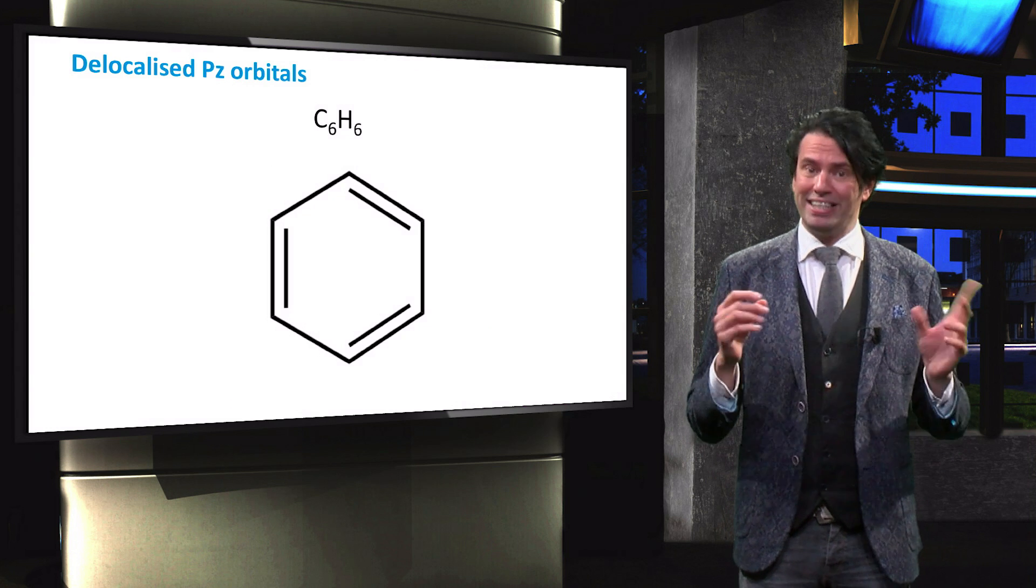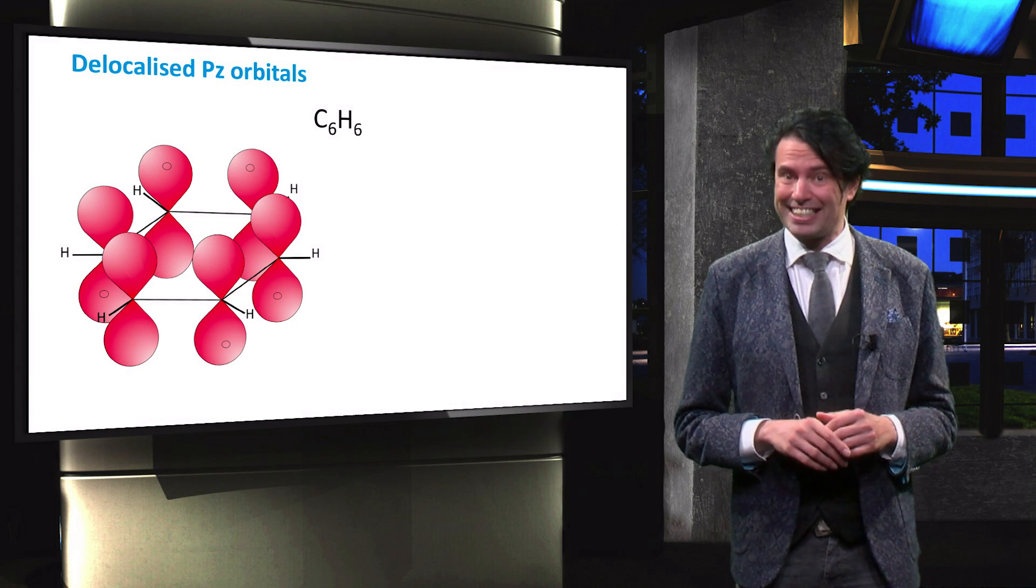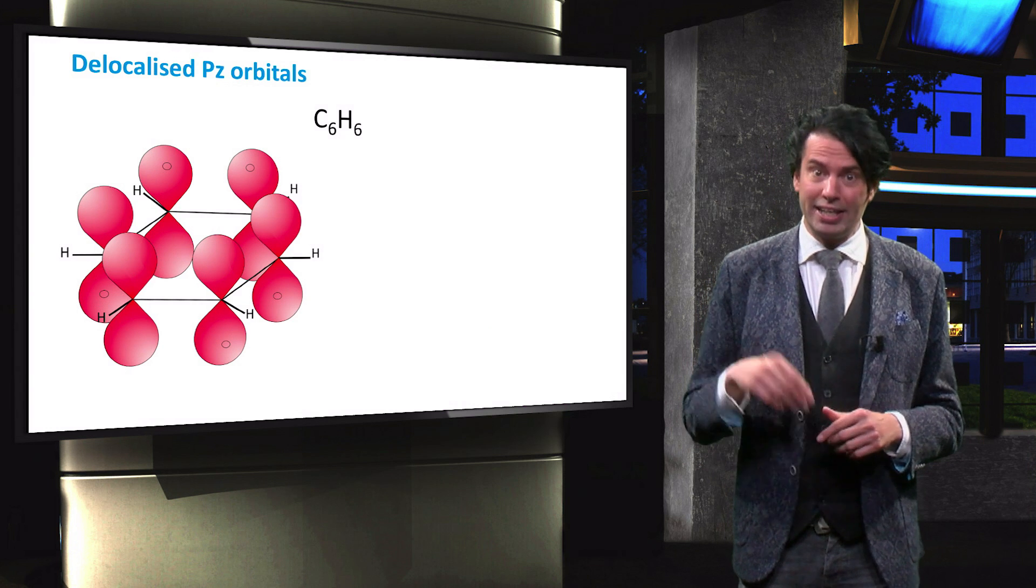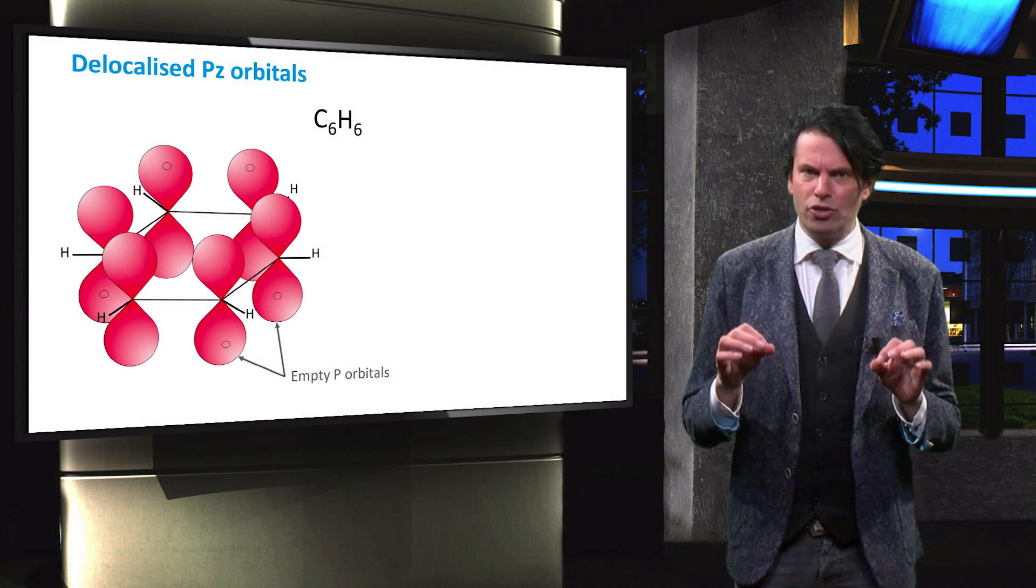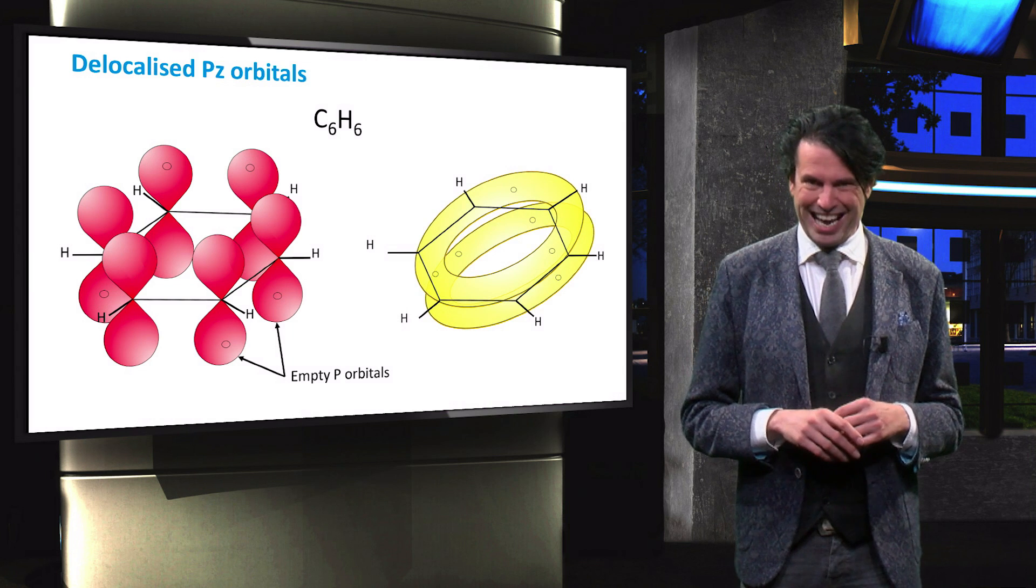In another example, benzene, with an empirical formula of C6H6, has alternating double bonds in its structure. It denotes the presence of free unbonded p orbitals on neighboring carbon atoms.